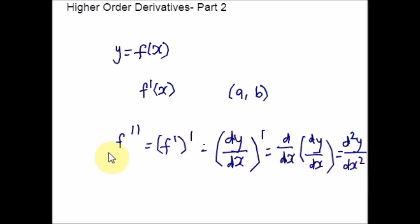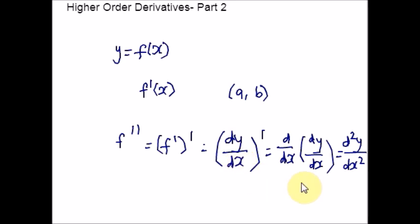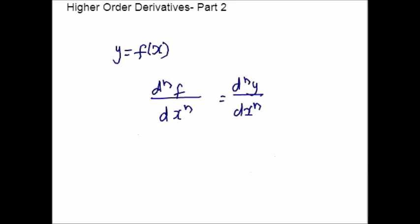Similarly, if f'' exists and is differentiable, we can calculate the third derivative of the function f(x), which is denoted by f''' or d³y/dx³ or y'''. The result of taking the derivative n times is called the nth derivative of f(x) with respect to x, and it is denoted in Leibniz notation.